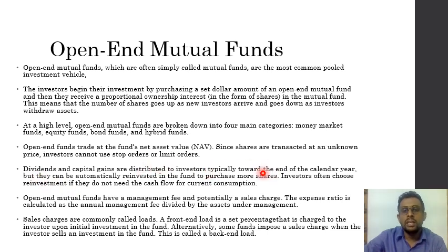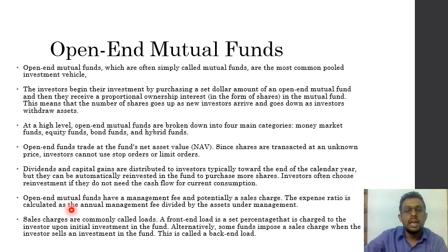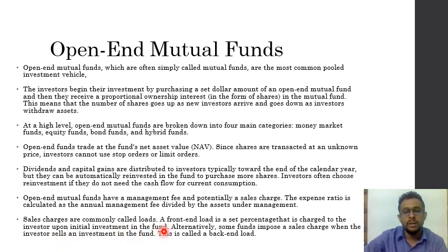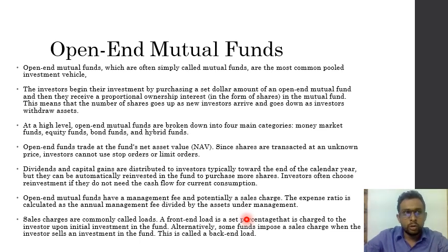Dividends and capital gains are distributed to investors typically towards the end of the calendar year, and they can be reinvested if investors choose not to take cash flows. There are two costs of open-ended mutual funds: management fee and sales charge. The expense ratio is calculated as the annual management fee divided by assets under management. Management fees cover salaries and operational expenses. Sales charges are commonly called loads, and there are two types: front-end, charged upon initial investment, and back-end.